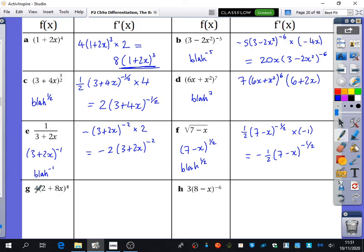And then these ones down here have just got an extra coefficient at the beginning, which just hangs around there, OK? So this is kind of like a 4 blah to the 4. And 4 blah to the 4 would differentiate to 16 blah cubed. So it is going to be 16 blah cubed,